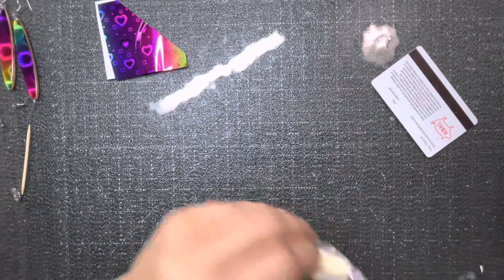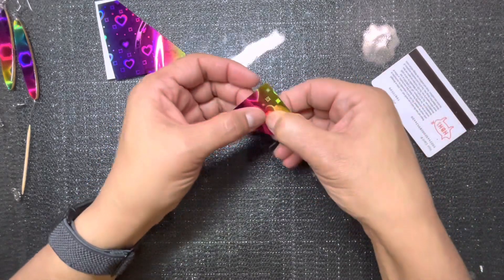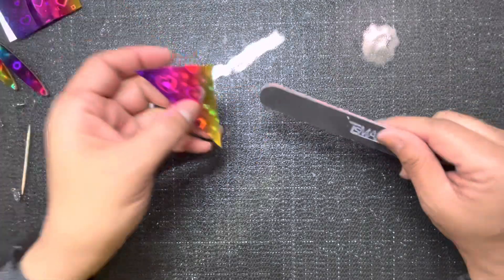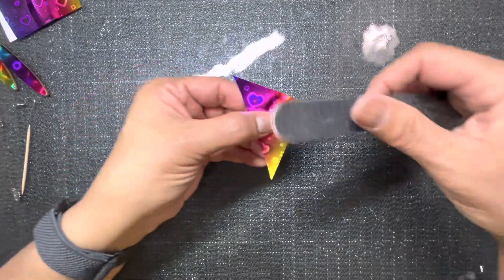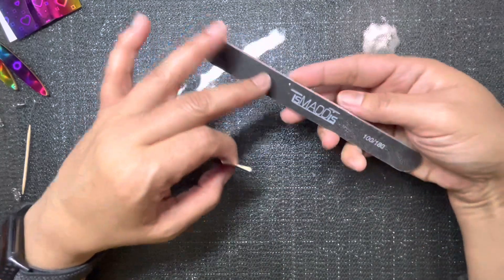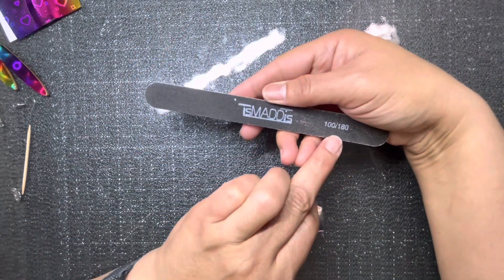start working with my piece. So I'm going to press press press. Now here's where the file comes in. Okay. And I usually use the coarse side. There's a medium side and coarse side, it's a hundred and then a hundred and eighty. So I'm using the coarser side first.